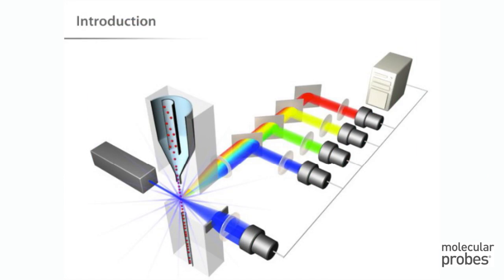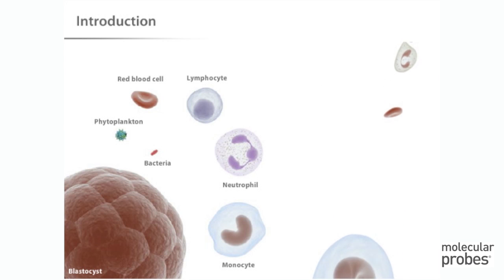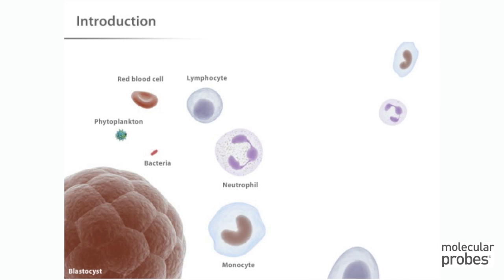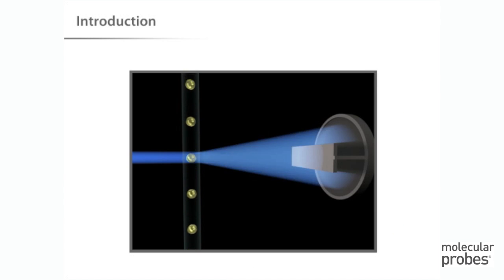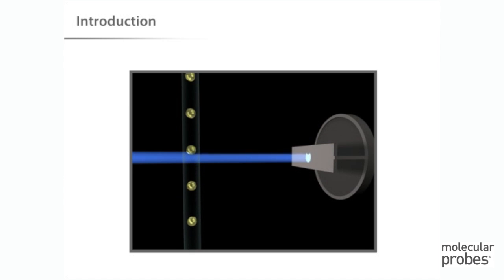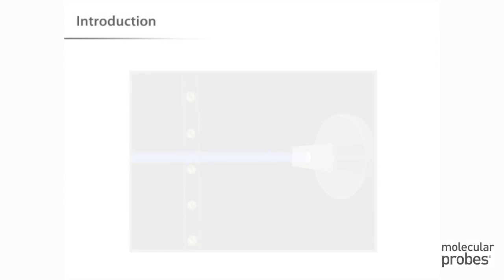Now that you understand the mechanics of flow cytometry from Tutorial 1, let's take a closer look at how the data collected by the instrument can be analyzed. Recall that flow cytometry is a technique for the rapid analysis of multiple characteristics of cell populations. As each cell passes through the laser beam of the cytometer, the detectors collect light intensity data for forward scatter, side scatter, and each of the fluorescence channels.